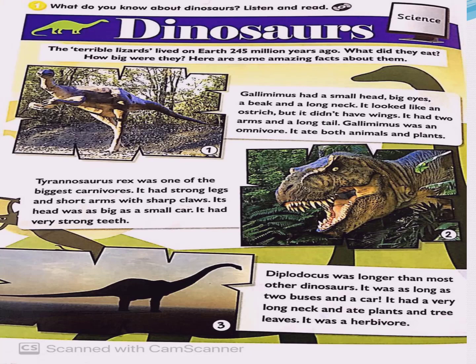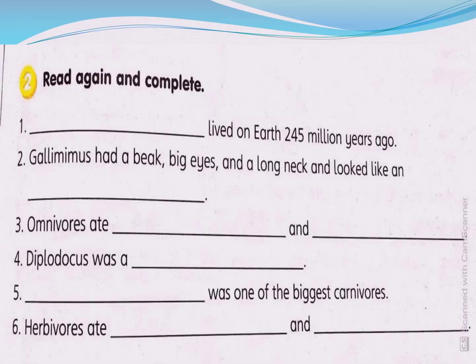Now you have to open your student book to page 76. You have to read the text well and then answer the questions on page 77. The text is about dinosaurs and has amazing information about three different kinds of dinosaurs. You must read it well and then answer the questions on page 77 in the student book.